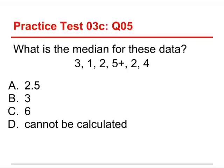Alright, last question. What is the median for these data? It's the same data set here. 3, 1, 2, 5+, 2, and 4. And the choices are 2.5, 3, 6, and cannot be calculated. Well, the median is different from the mean. And so, the answer in this case is 2.5. And here's why.